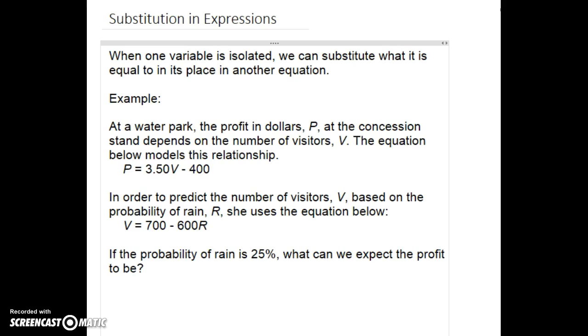For example, we're going to go through the more complicated steps at first. At a waterpark, the profit in dollars, P, at the concession stand depends on the number of visitors, V. The equation below models this relationship: profit equals 3.50V minus 400.